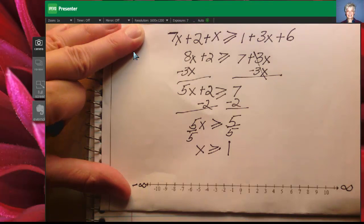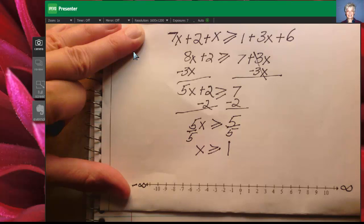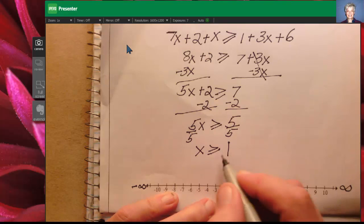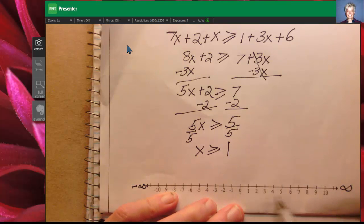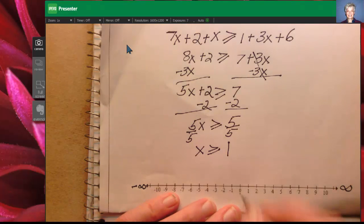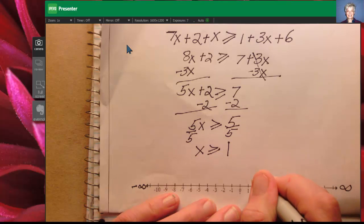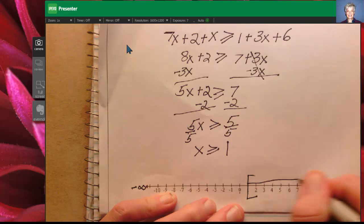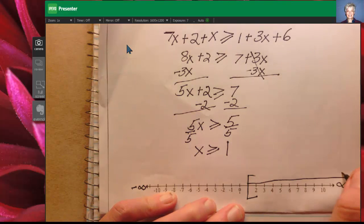1 is my end point and x can actually equal 1 or be greater than 1. So I find the number 1 and I see that, okay, well what are the numbers greater than 1? Well like 2, 3, 4, 5, 10. So that means my arrow is going to go off to the right. I am going to put a bracket here at 1 and then an arrow going off to the right.